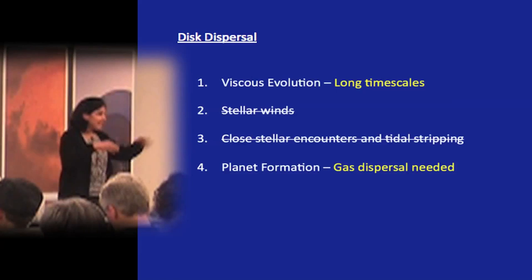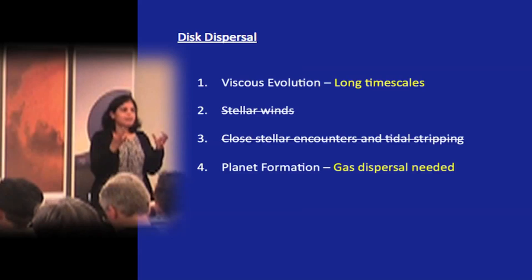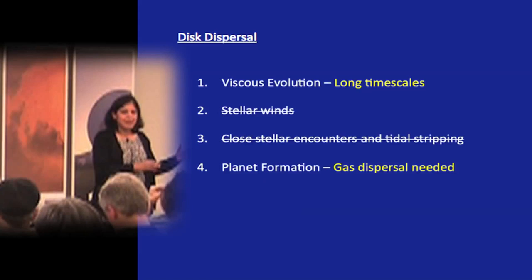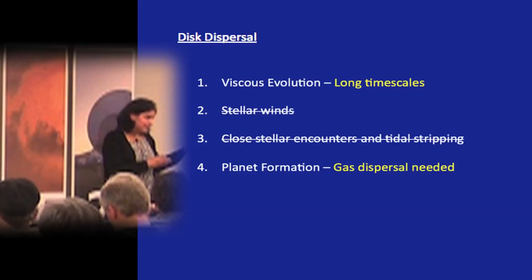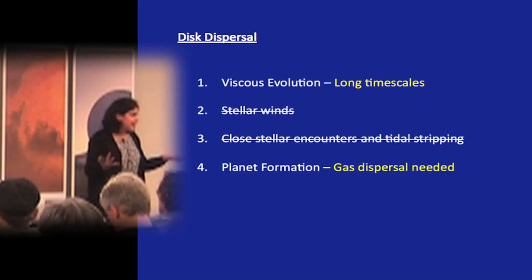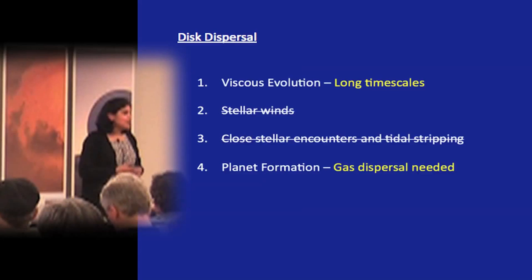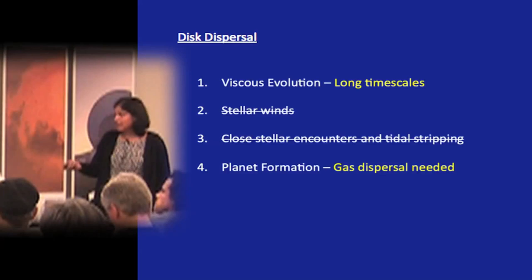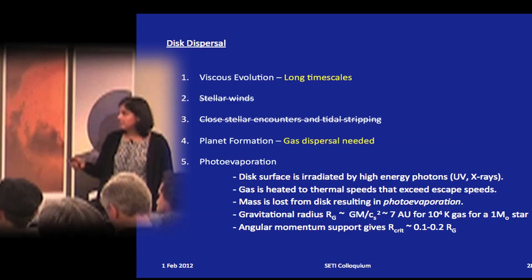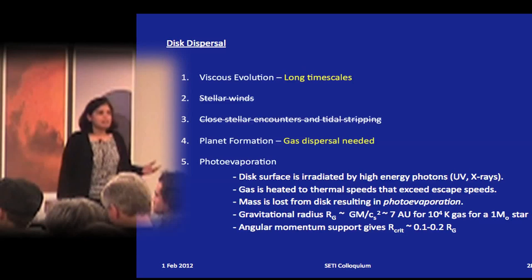Planet formation itself might consume much of the solid material in the disc, but in our solar system the mass in solids versus gas implies that most of the gas was dissipated. This gives rise to the concept of the minimum mass solar nebula — the minimum disc mass needed to form our present solar system — which clearly shows that most of the gas was dispersed. You therefore need a gas dispersal mechanism, which brings us to photoevaporation.